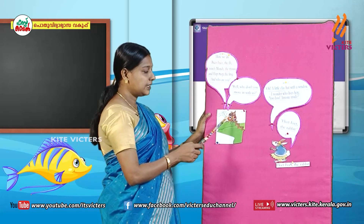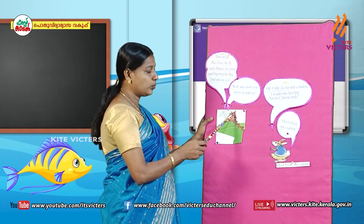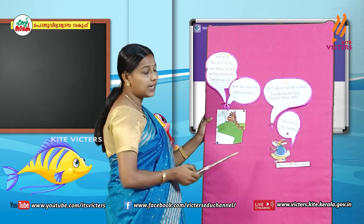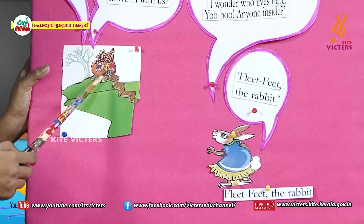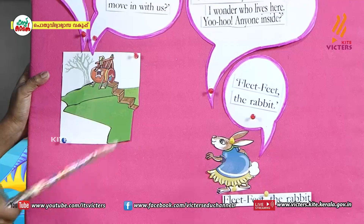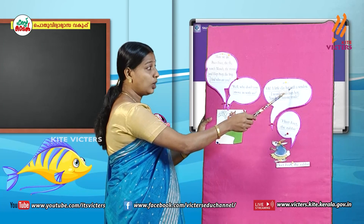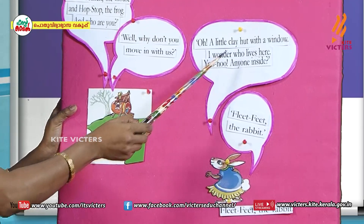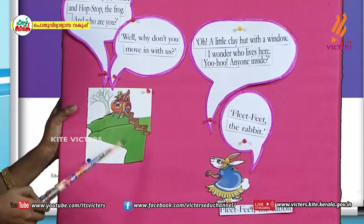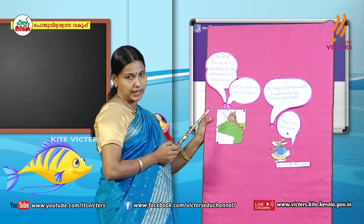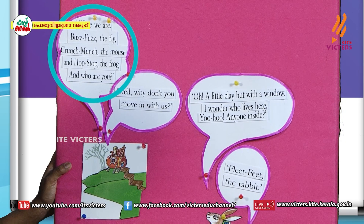Look here — this is the clay hut with a roof. Here comes Fleet Feet the rabbit. Seeing this clay hut, the rabbit wondered and asked: 'Oh, a little clay hut with a window. I wonder who lives here. Yoo-hoo, anyone inside?' And the inmates replied: 'Here we are — BuzzFuzz the fly, Crunch Munch the mouse, and Hop Stop the frog.'